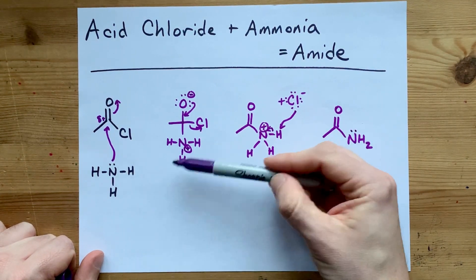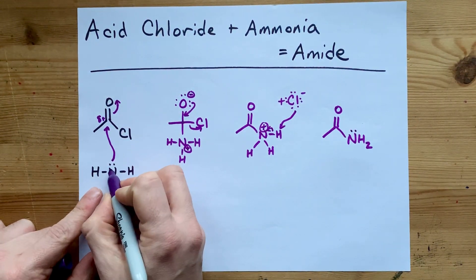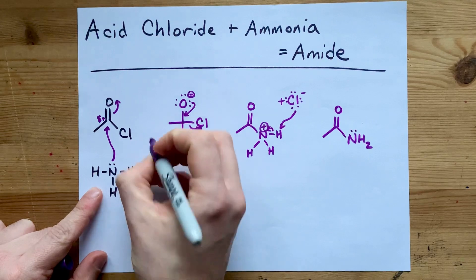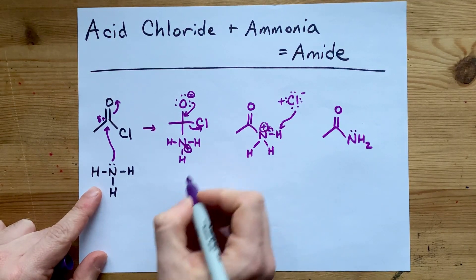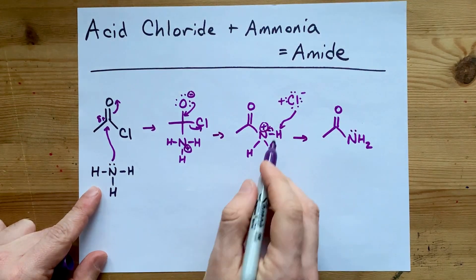And that's it. You're going to attack the carbon with the lone pair on nitrogen. You're going to lose the chloride, and the chloride is going to be the thing that takes away the one extra hydrogen from the ammonia to leave you with the amide.